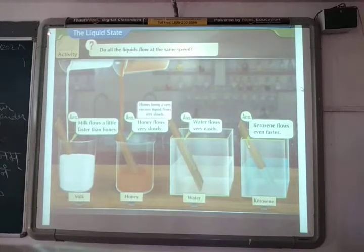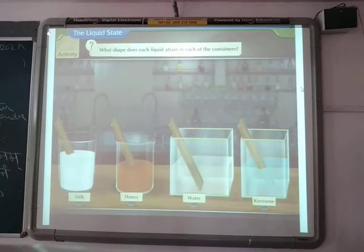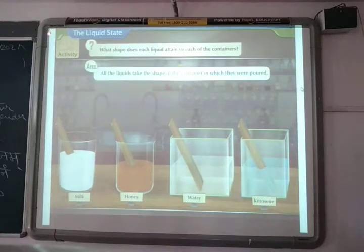Kerosene flows a little faster. Honey, being a very viscous liquid, flows very slowly. And kerosene, being less viscous, flows very fast. What shape does each liquid attain in each of the containers? All the liquids take the shape of the containers in which they are poured.